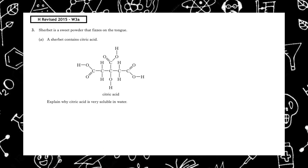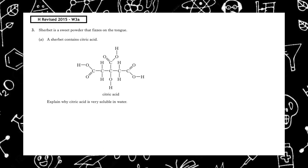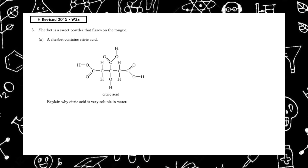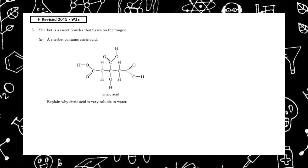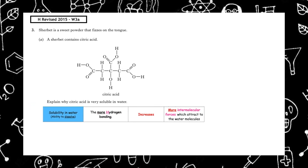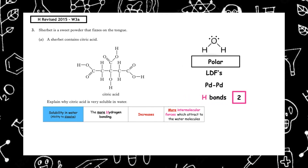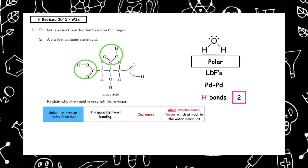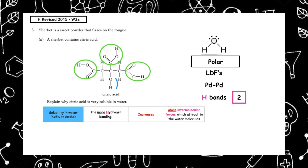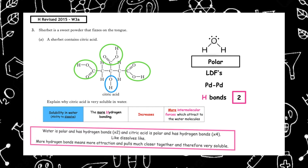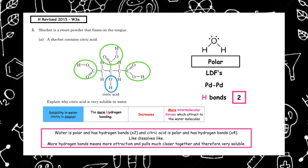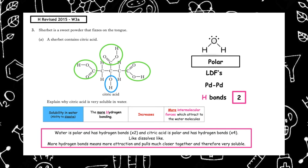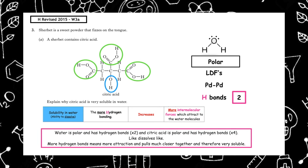This past paper question is from The Higher, revised 2015, written 3A. Sherbet is a sweet powder that fizzes on the tongue and contains citric acid. Explain why citric acid is very soluble in water. Water is polar and therefore has hydrogen bonding. Citric acid has three carboxyl groups and one hydroxyl group. There is a difference in electronegativity between the oxygen and hydrogen in each of those groups, which means citric acid can give off four hydrogen bonds per molecule. Because it has lots of hydrogen bonds and water also has hydrogen bonding, it will be extremely soluble — like dissolves like.